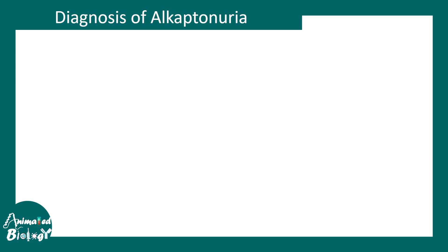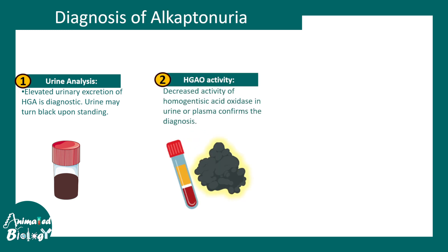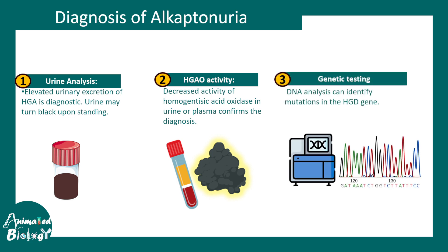When it comes to diagnosis of alkaptonuria, it can be diagnosed by simply observing the urine color, or by performing an assay from plasma or urine to monitor homogentisic acid oxidase activity. Genetic testing, though less common, is also a confirmatory test — looking at the HGD gene mutation is a key way to confirm that the patient is affected with alkaptonuria.